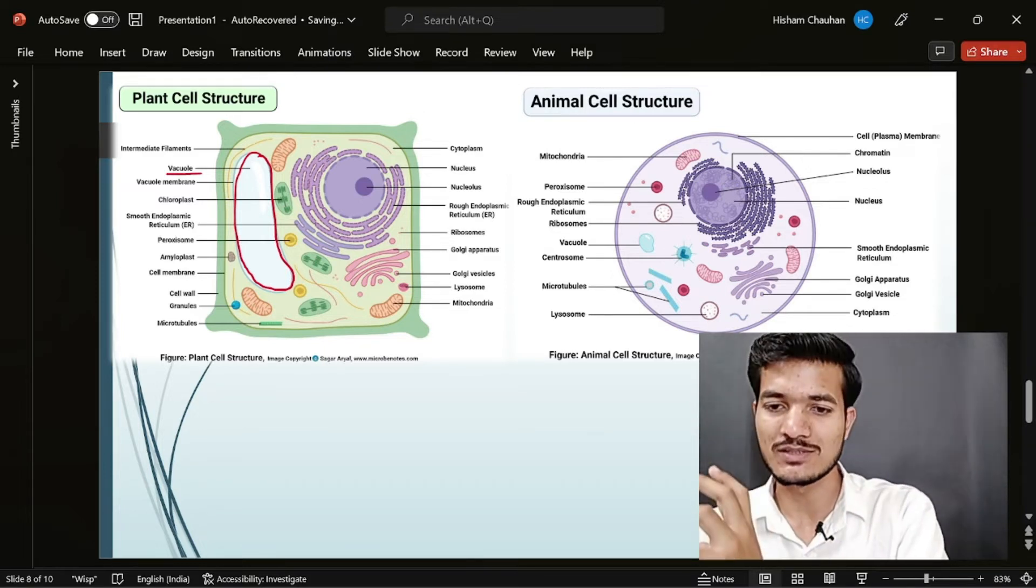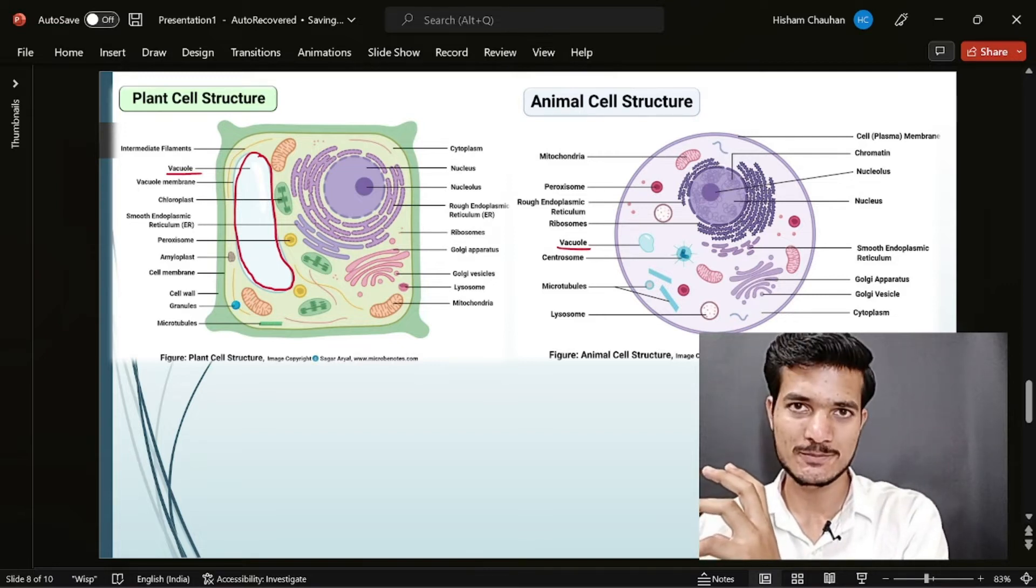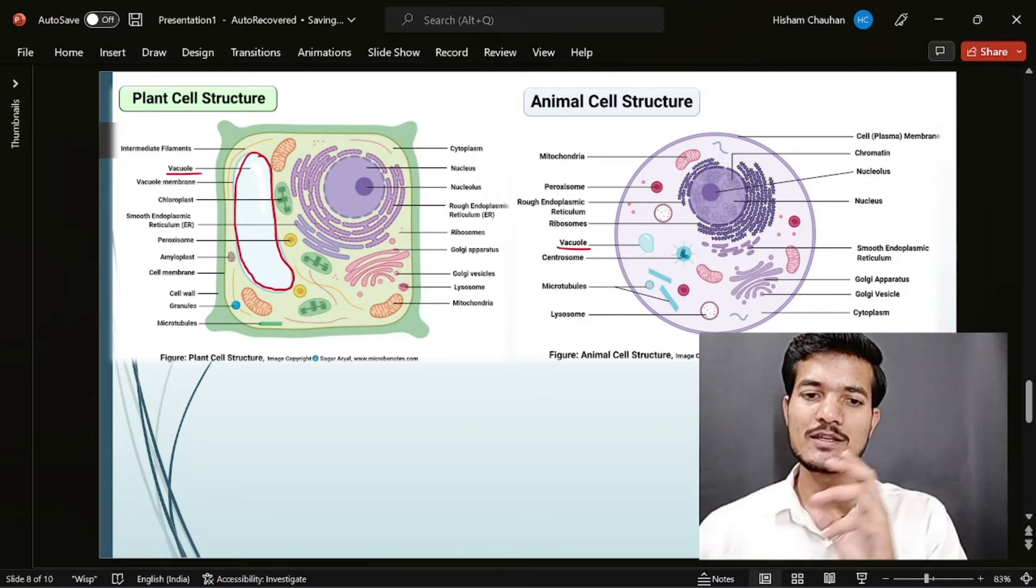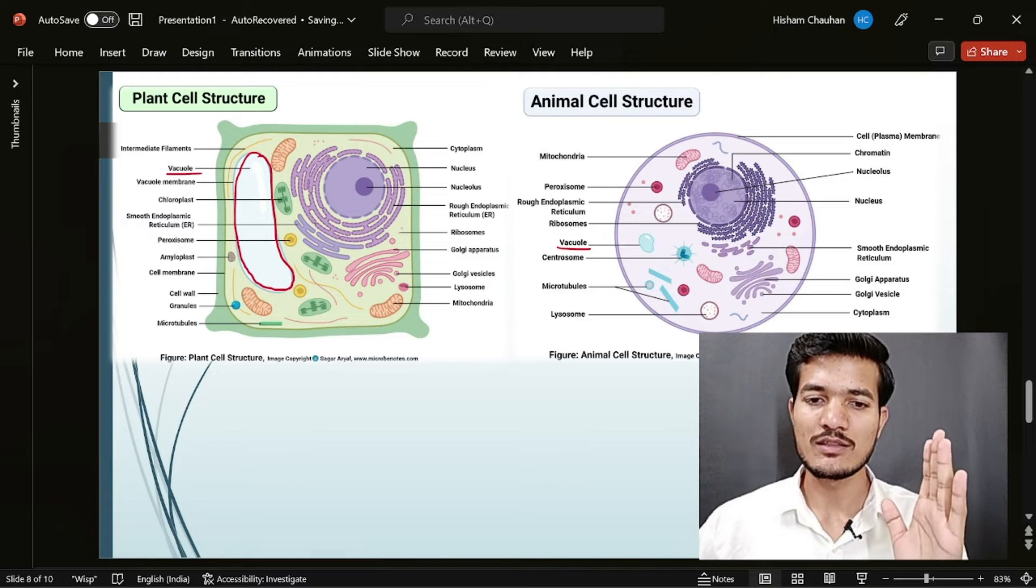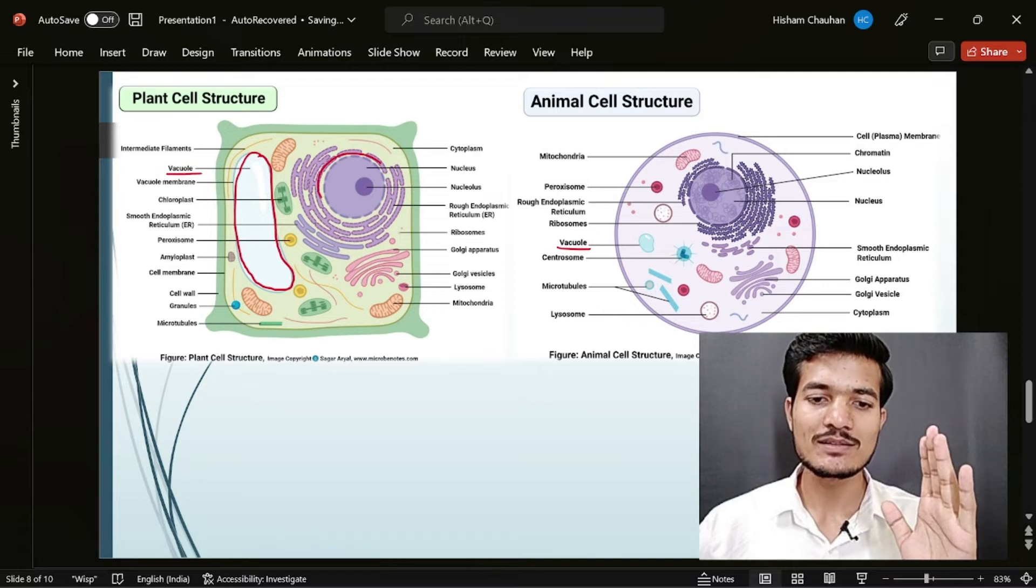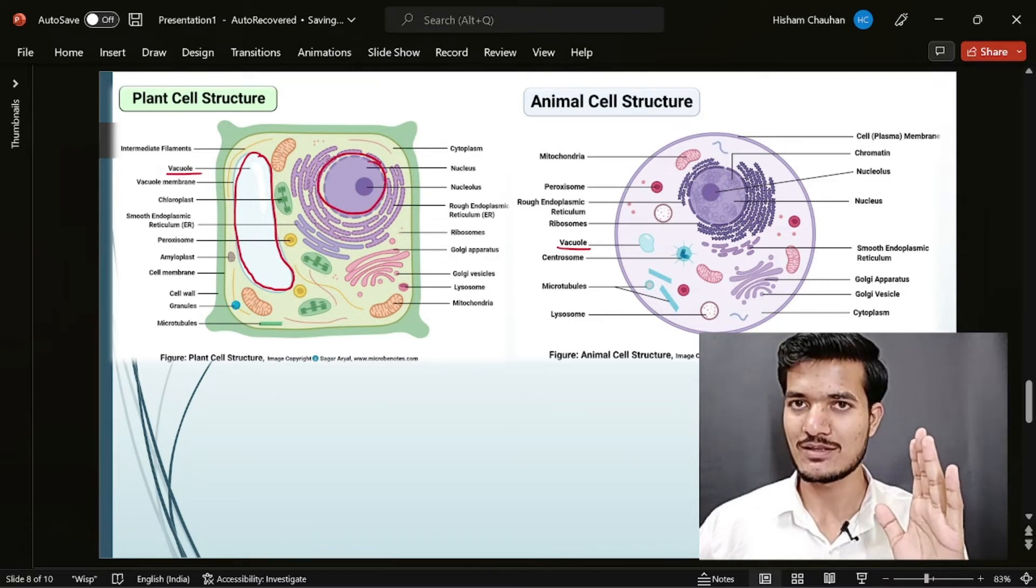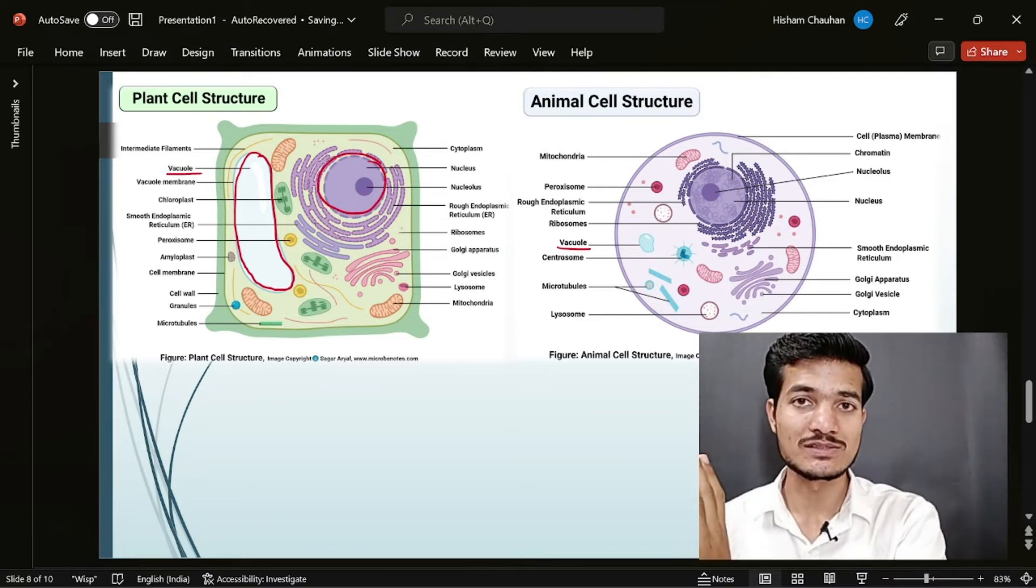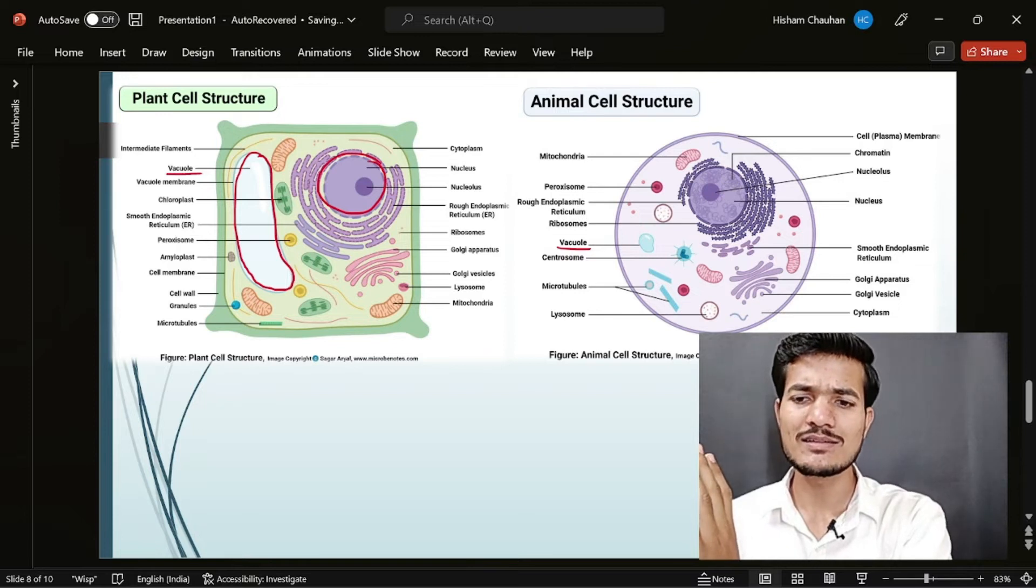Whereas in the case of animal cells, the vacuole is small. And due to this vacuole, in the case of plant cells, the nucleus is on one side, whereas in the case of animal cells, the nucleus is a bit in the center.